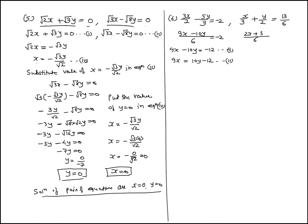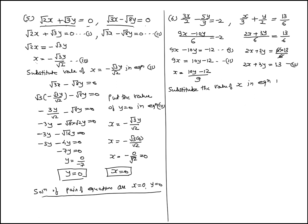Now taking LCM again: 6 gives 2 into x so 2x, and 3 into y so 3y. Since 2 and 3 are prime numbers, we do cross multiplication. This gives 2x plus 3y equal to 6 into 13 upon 6; the 6 cancels, so 2x plus 3y equal to 13 (equation 3).